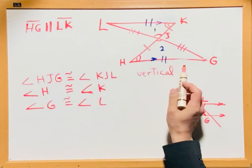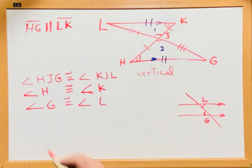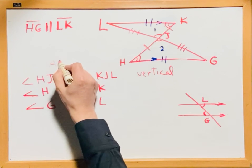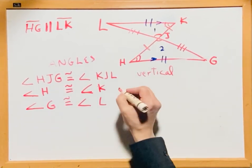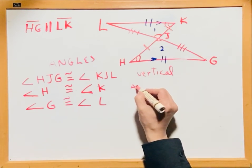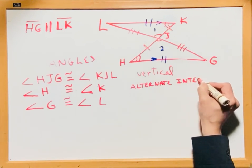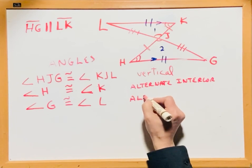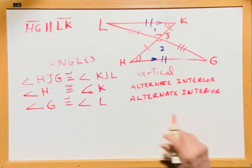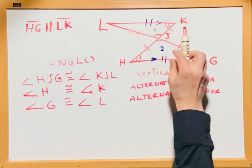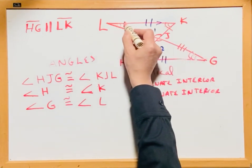Right now we have three angles that are congruent and three sides that are congruent. Let's write it out. HG — that gives us two angles. Let me write here: alternate interior angle, alternate interior angle. Because they are alternate interior angles and these two sides are parallel, that means these angles are congruent. I have to write one, two, three — one, two, three — to identify that they are congruent.